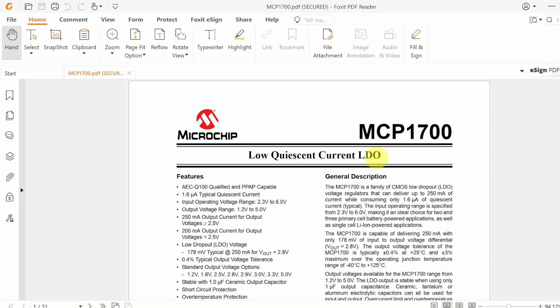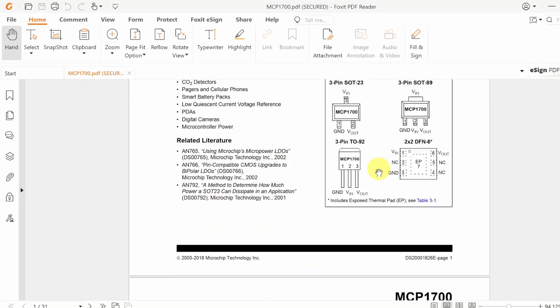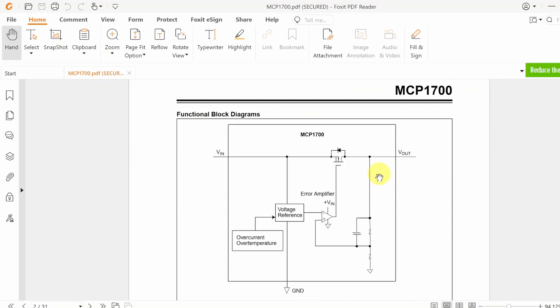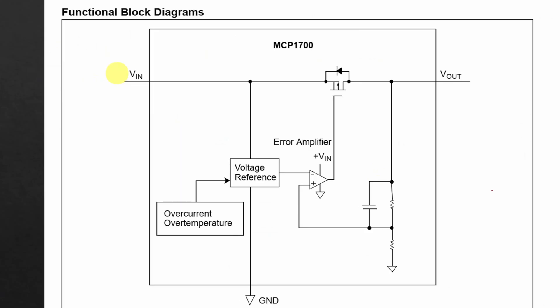I pulled up the MCP700 datasheet here and this is the functional block diagram. The regulator has three pins: input, ground, and output pin.